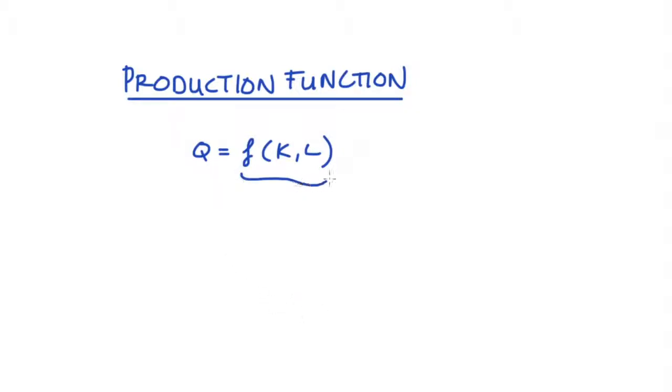This bit of notation here is what we call functional notation, and it just means exactly what I said, that the quantity that the firm produces Q is dependent on, or some function of (that's how we get the F symbol here), the level of capital and the level of labour. So we're just going to use this functional notation going forward, and that will be our production function.